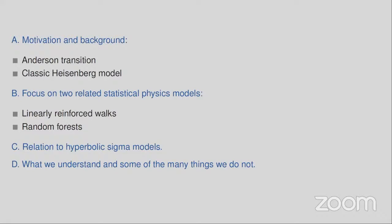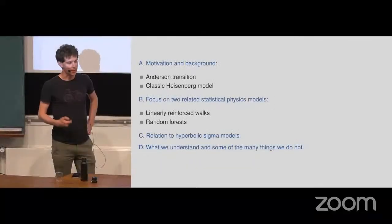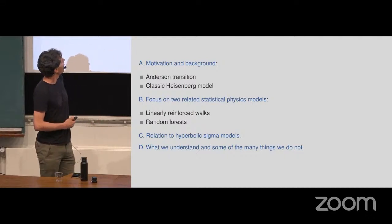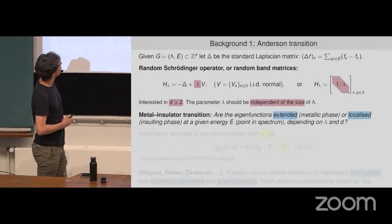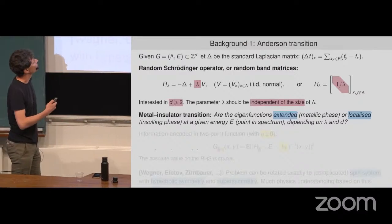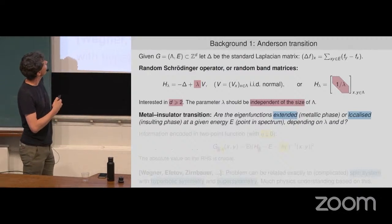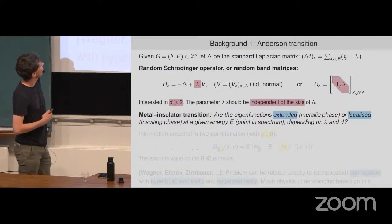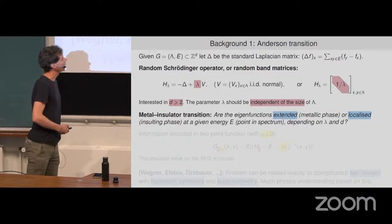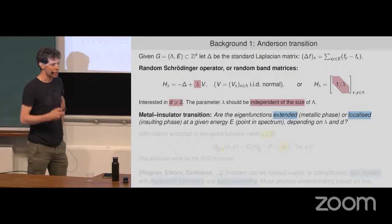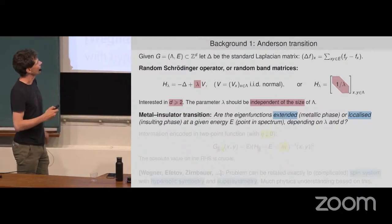The models I'll be talking about have various motivations, but from my perspective, the problems of the Anderson transition and the magnetism transition in the classical Heisenberg models are the problems that inspired us. Let me be clear, we have nothing new to say about these two problems here. I'll always be working on Z^d, or a finite portion of Z^d, and I'm only interested in dimensions at least two.